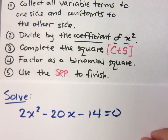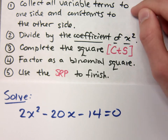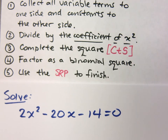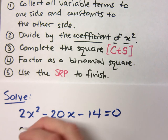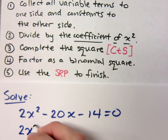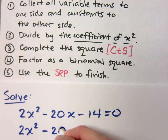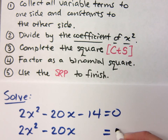Alright, so let's solve this by completing the square. I've got the steps up here so we can easily follow along. The first step, I need to move 14 to the other side. So that means I have 2x squared minus 20x is equal to 14.